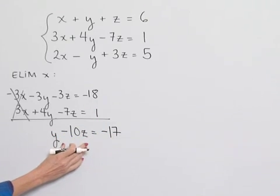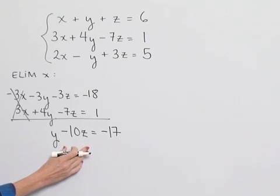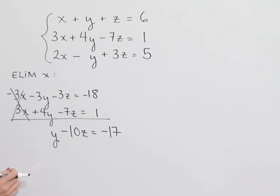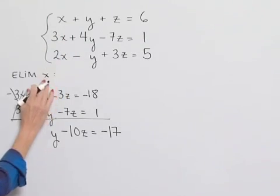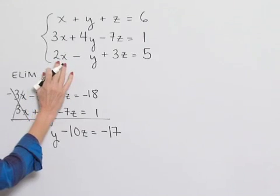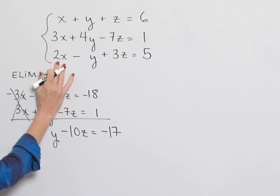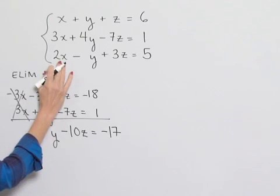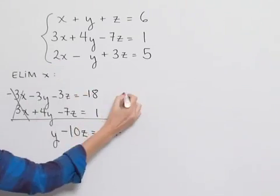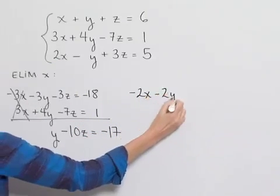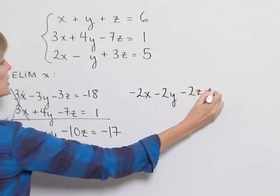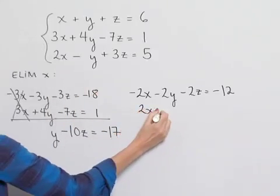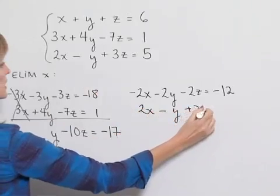So we've ended up with an equation that has only y and z in it. Now we want to go back to the original and work with equation one and equation three to eliminate x. Remember that we want to make sure we're eliminating the same variable each time. The coefficient of x on our third equation is two, so if we multiply every term in the first equation by negative two, we can add those and get zero. So we'll have negative two x minus two y minus two z equals negative twelve for our first equation.